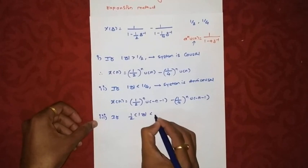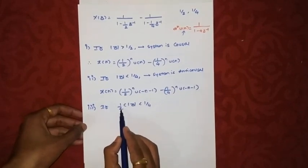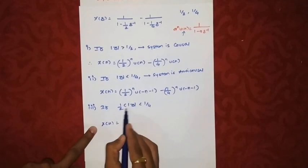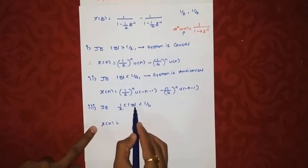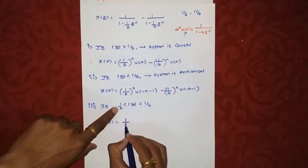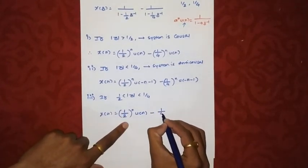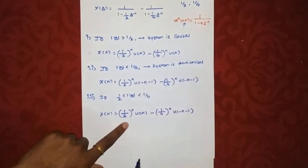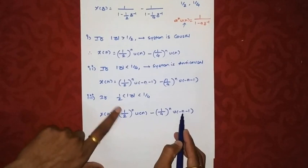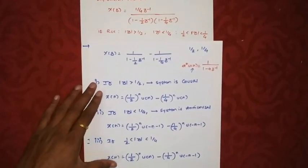In the third case, if 1/4 < |z| < 1/2, the system is both-sided. Since |z| > 1/4 makes the 1/4-pole term right-sided and |z| < 1/2 makes the 1/2-pole term left-sided, we write x(n) = (1/2)ⁿ·u(n) − (1/4)ⁿ·u(−n−1). This is how inverse Z-transform is found using partial fraction expansion.